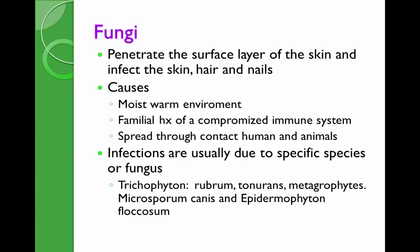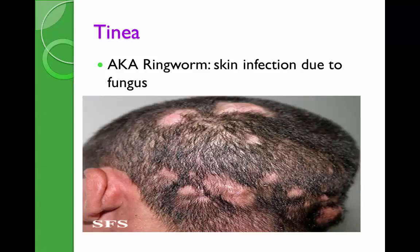The fungi penetrate the surface layers of skin, hair, and nails because they require keratin to nourish themselves. They grow in moist, warm environments and have a hereditary or familial predisposition linked to a compromised immune system. The name of the infection is acquired based on the site: tinea capitis (scalp), tinea unguium (nails), tinea corporis (body). There is also tinea versicolor. Severity is determined by the organism's virulence and host susceptibility — it is most severe on the scalp and nails.